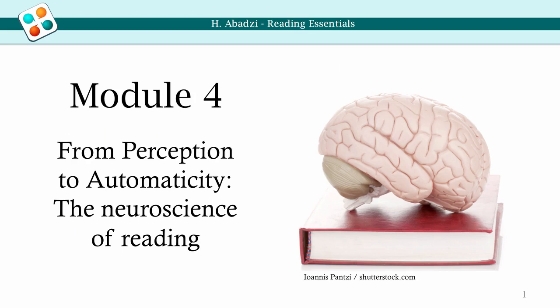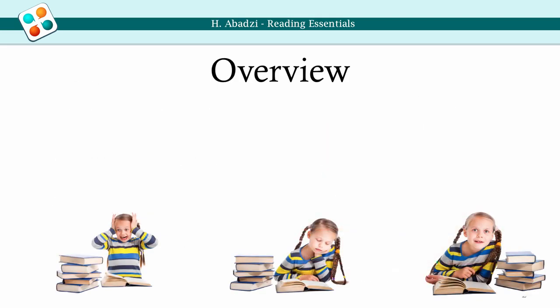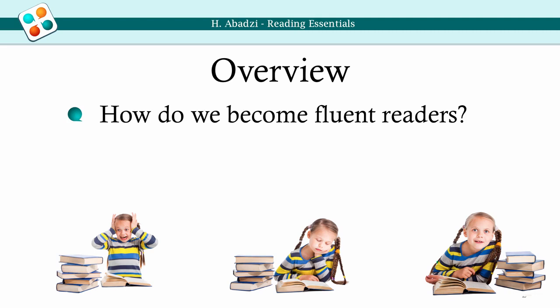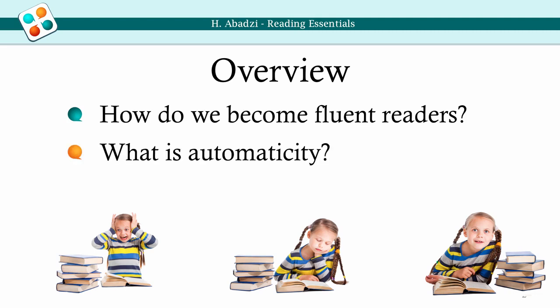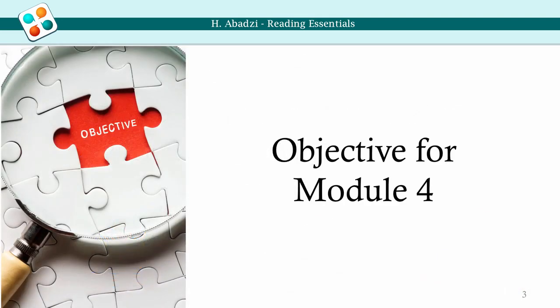Module 4: From Perception to Automaticity — The Neuroscience of Reading. Let's try to understand: how do we become fluent readers? What is automaticity? Why does it matter? In this module, you will learn more about a fascinating story and its implications for reading voluminous text. After completing this module, you will be able to explain the basic reading processes and the development of automaticity.